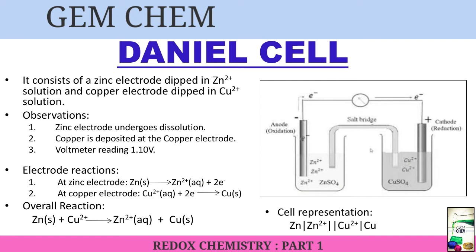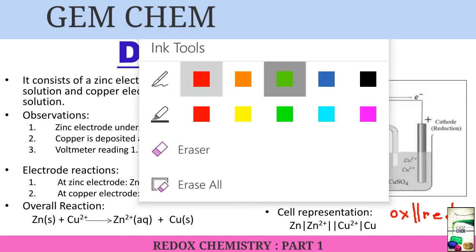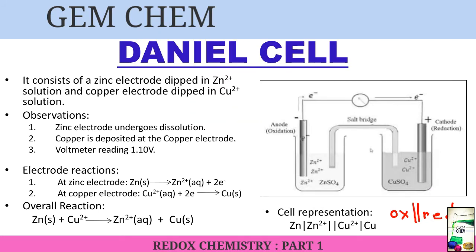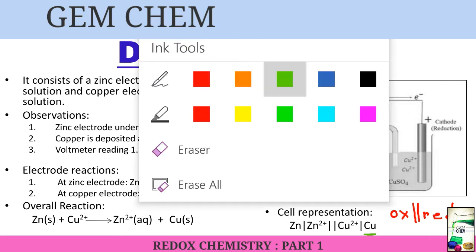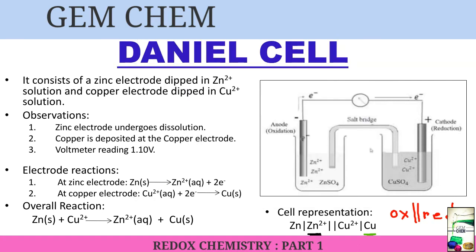The overall reaction is: Zn(s) + Cu²⁺(aq) → Zn²⁺(aq) + Cu(s). The cell representation is written with oxidation first and reduction second. The solid species — Zn and Cu — are written at the extremes, and the ions are written in the middle.